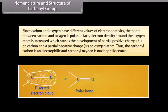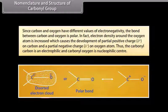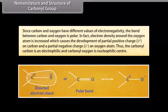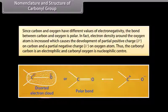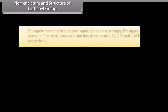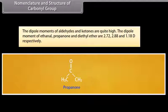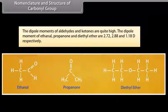Since carbon and oxygen have different electronegativities, the bond between them is polar. Electron density around the oxygen atom is increased, which causes the development of a partial positive charge on carbon and a partial negative charge on oxygen. Thus, the carbonyl carbon is an electrophilic center and carbonyl oxygen is a nucleophilic center. The dipole moments of ethanal, propanone, and diethyl ether are 2.72, 2.88, and 1.18 debye, respectively.